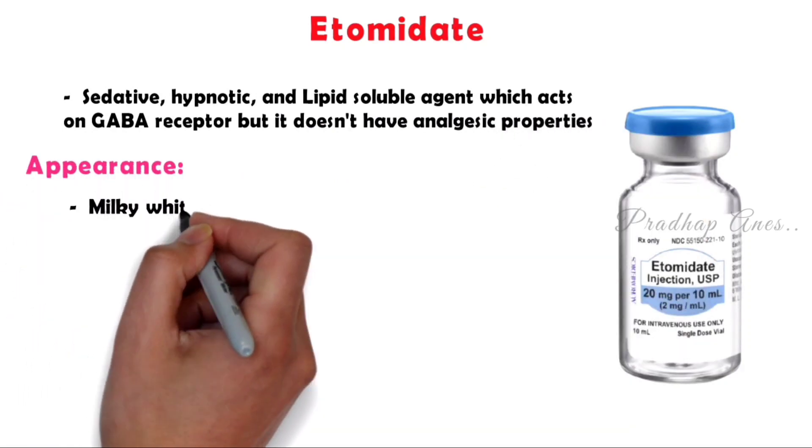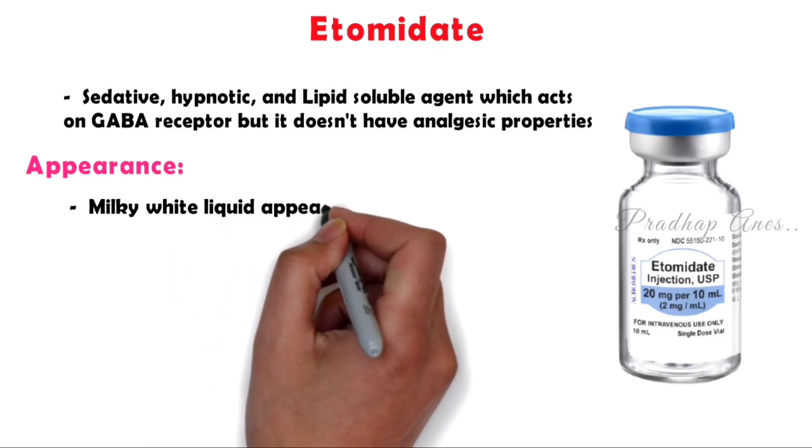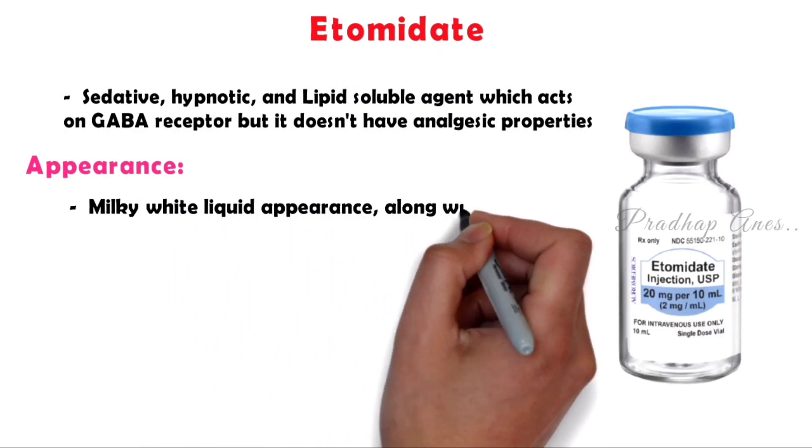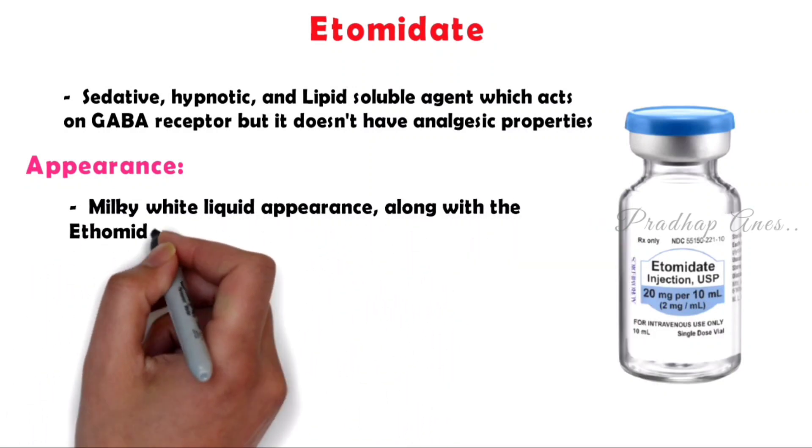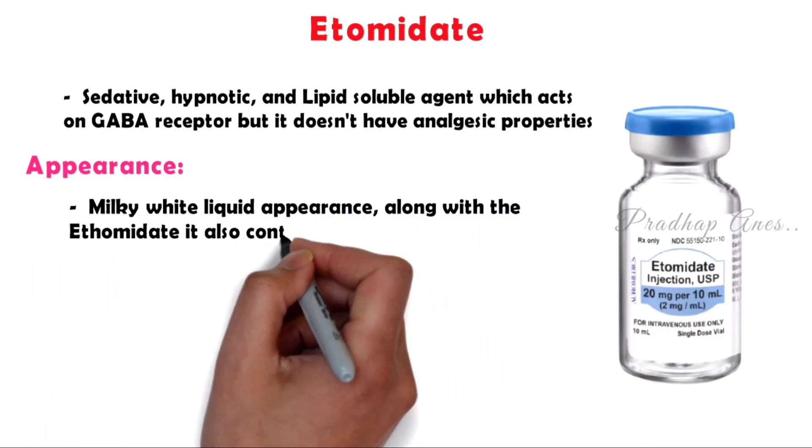It has a milky white liquid appearance. Along with etomidate, it also contains propylene glycol.